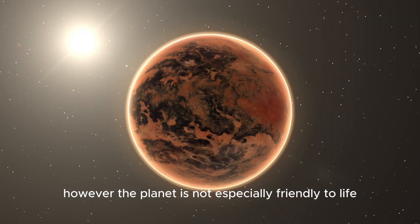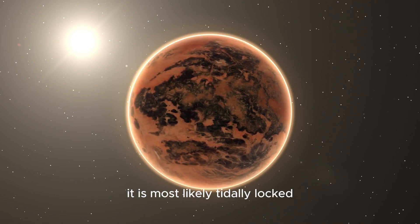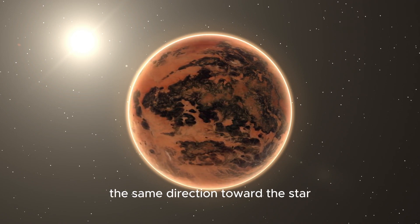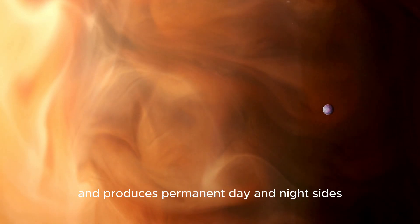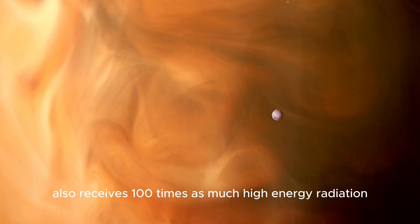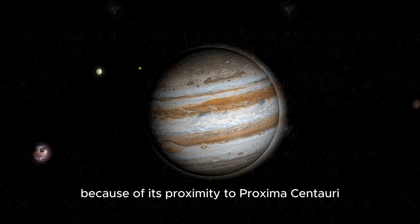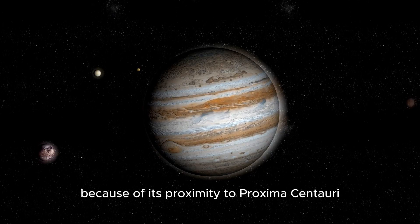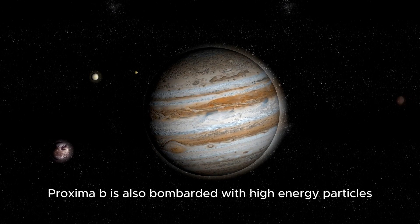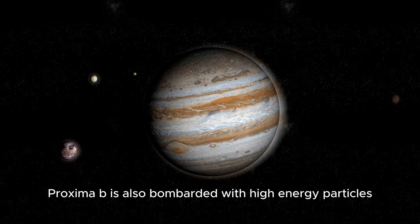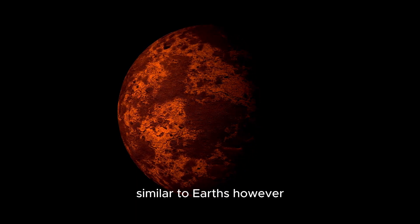However, the planet is not especially friendly to life. It is most likely tidally locked, which means that it always faces the same direction toward the star and produces permanent day and night sides with significant temperature changes. The planet also receives 100 times as much high-energy radiation as Earth does because of its proximity to Proxima Centauri, including X-ray and ultraviolet light. Proxima b is also bombarded with high-energy particles during star flare-ups unless it has a shielding magnetic field similar to Earth's.